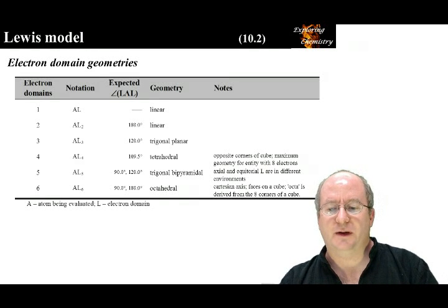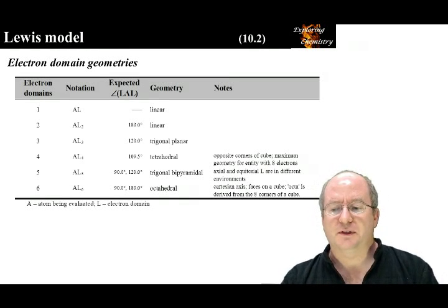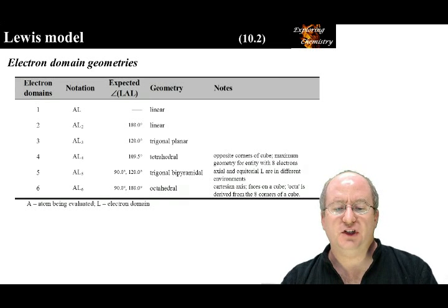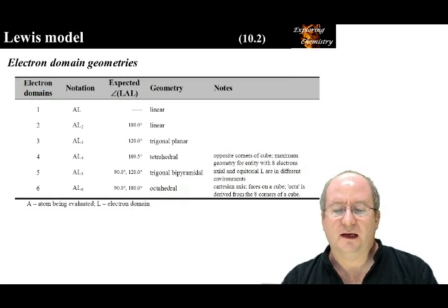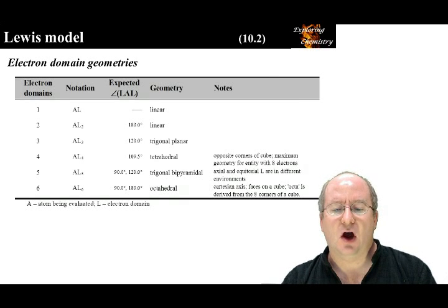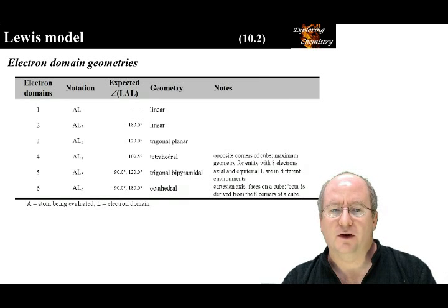These are the electron domain geometries for up to 6 electron domains surrounding a central atom. A is the central atom, and L are the electron domains. These geometries are sometimes called the parent geometries. With one electron domain, the geometry is linear — recall that two points make a line. With two electron domains, the farthest they can be from each other is on opposite sides of the central atom, again forming a linear geometry. The bond angle is 180 degrees.